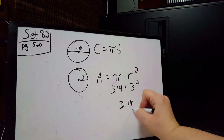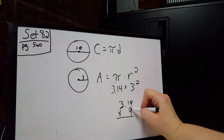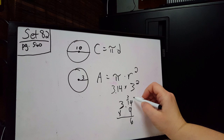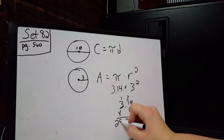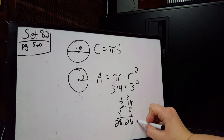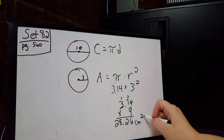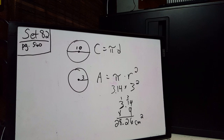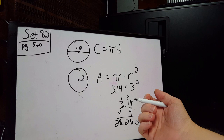So we need to figure out 3.14 times 9. Working that out: 9 times 4 is 36, 9 times 1 is 9 plus 3 is 12, 9 times 3 is 27 plus 1 is 28. We have two decimal places, so we place the decimal to get 28.26. We then put the units — for example, centimeters — and write them squared, because area is always expressed in squared units.